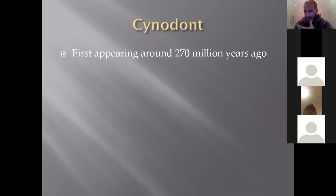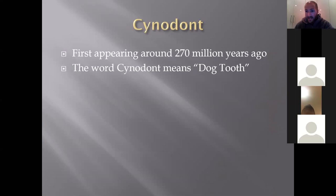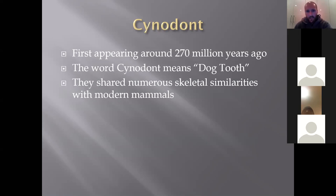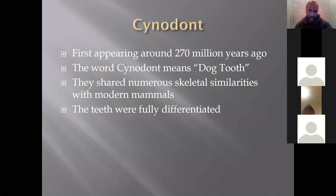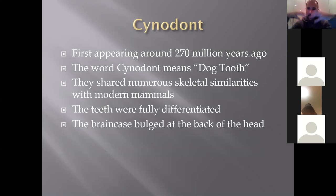The cynodonts were becoming increasingly more mammalian. We obviously can't test if they were endothermic from fossils, but we know they had hair and many of the bone structures modern mammals have, though they were still fairly reptilian in many ways. They first started appearing 270 million years ago. The word 'cynodont' literally means 'dog tooth' — the first fossils discovered looked like a dog's tooth to scientists. They shared numerous skeletal similarities with modern mammals and their teeth were fully differentiated: molars, premolars, incisors and canines — unlike reptiles which generally just have uniform teeth.